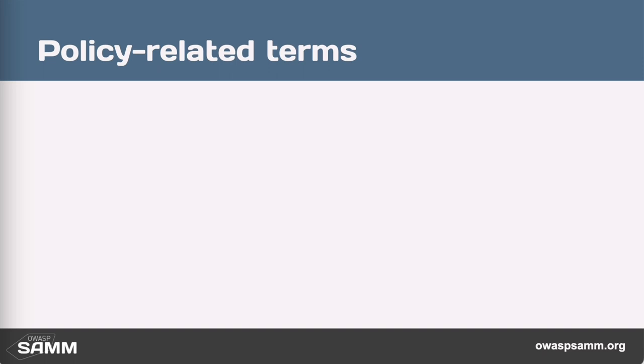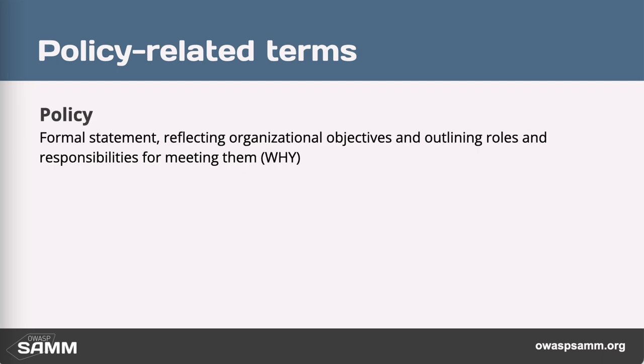One of the typical questions at this point would be: what is a policy and what is a standard? Policy describes the overall objectives and especially why the organization is concerned about this. It might include governing documents and reference all of the sources for compliance requirements. Policies also reflect on roles and responsibilities for complying with different parts of it. In summary, what are the overarching expectations and why do we have them? That is what policy is all about.